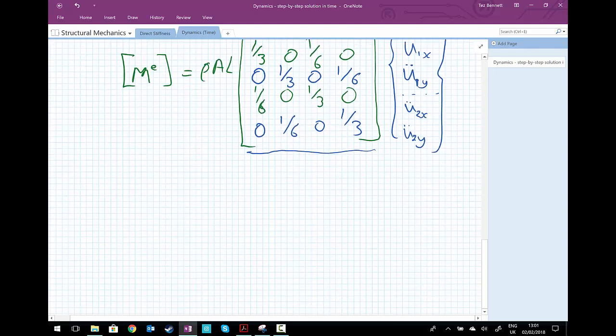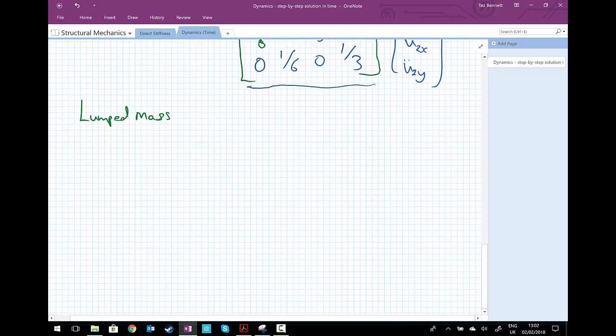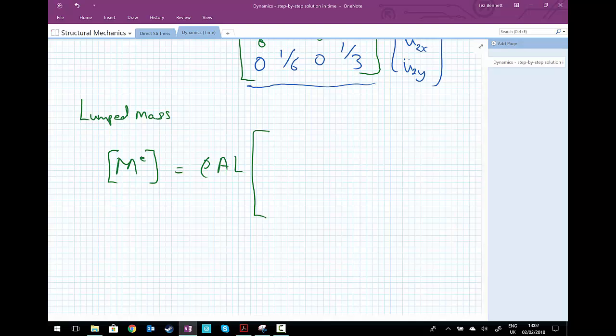That was the consistent mass. We're going to follow up now with a lumped mass scheme. In a similar way, we end up with twice the mass of the entire system, and we're also going to lump all the mass directly at the nodes. We still have ρ, A, L. We're still going to have four components in here, but because the mass is considered to be only at the node, what we have is a half, a half, a half, and a half. Everywhere else is zeros, just on the diagonals. We'll see later that having the mass just on the diagonals can actually be very useful for computational efficiency.